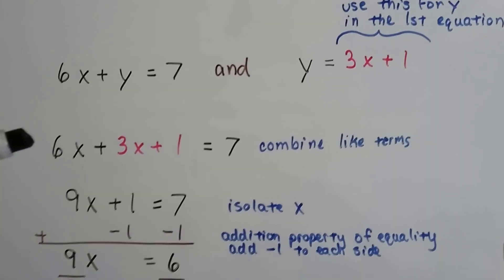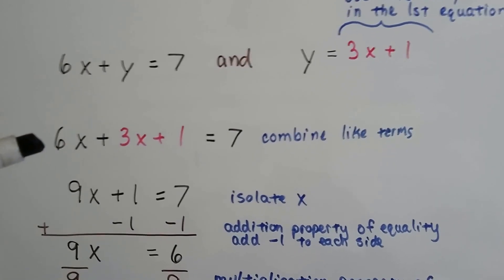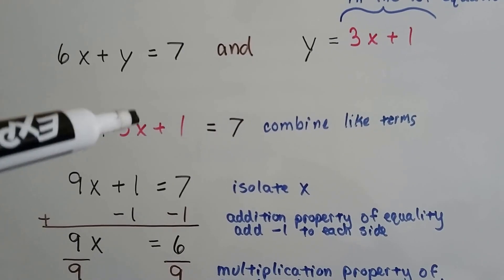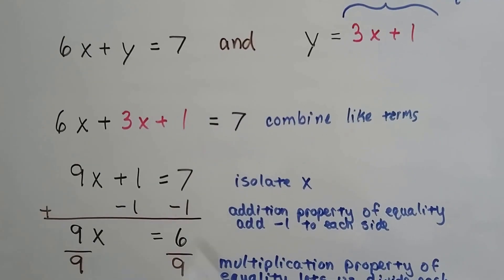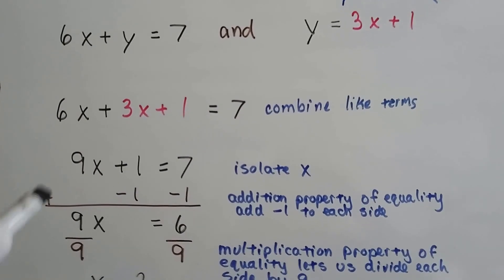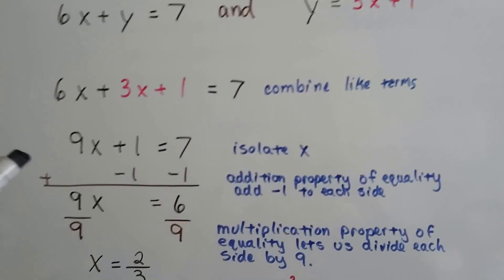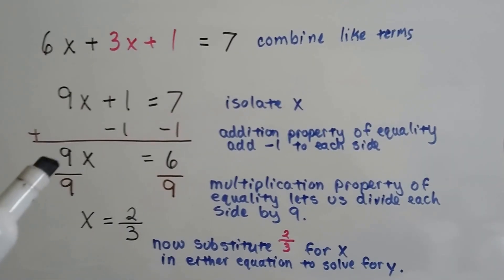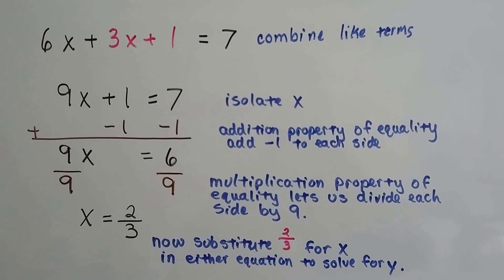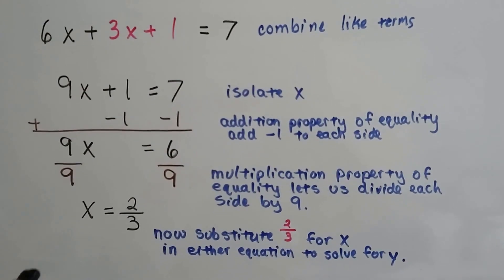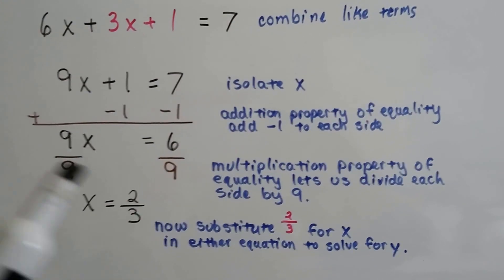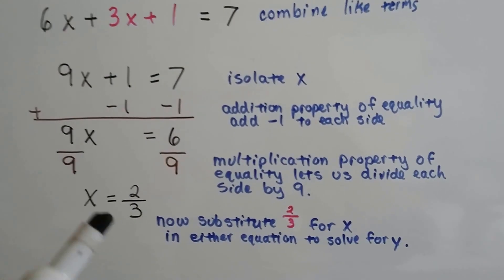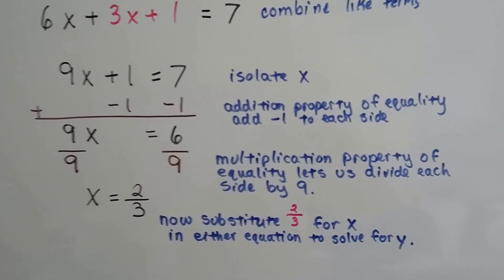So now we've got 6x plus 3x plus 1. This y became the 3x plus 1. We combine the like terms and we get 9x plus 1 equals 7. We need to isolate for the x. So we're going to add negative 1 to each side and get 9x equals 6. And the multiplication property lets us divide each side by this coefficient 9. And we get 1x equals 2 thirds when we simplify it.